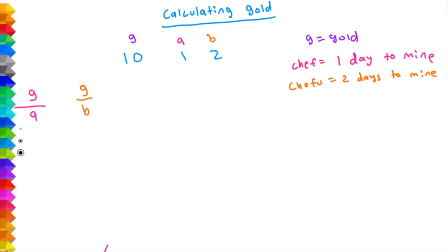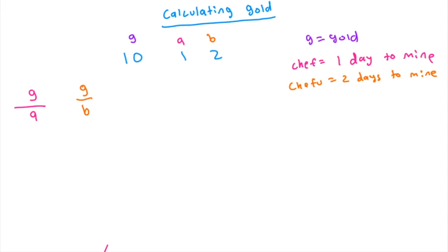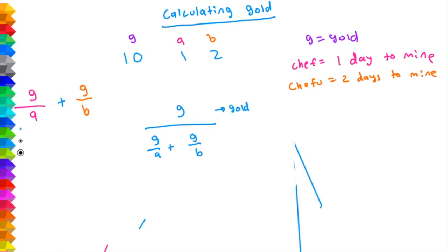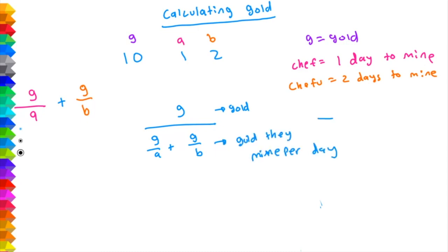So together, if they both mine in the same mine, they will get G/A + G/B gold combined in one day. If we take the total amount of gold G and divide it by this combined rate, we get how many days it takes for them to mine all that gold — because G divided by (gold per day) gives total days. Now that we know how much time it takes, we can multiply this amount by each person's rate to see how much gold each person gets.